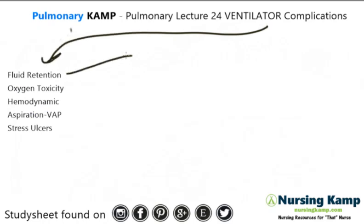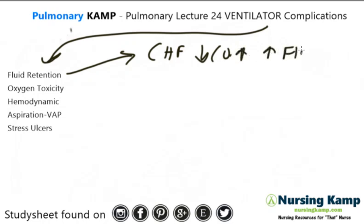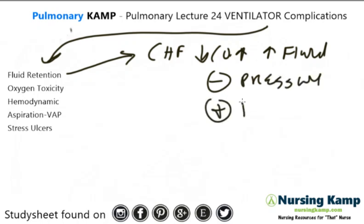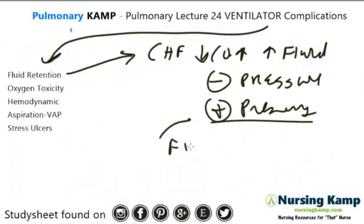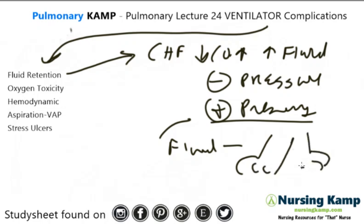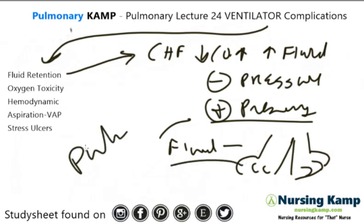When we talk about fluid retention, we're talking about patients who have CHF and they have decreased cardiac output. Once they have decreased cardiac output they're going to have an increase of fluid buildup. This can be related to the positive pressure versus negative pressure — we never have negative pressure breathing, and when you're on a ventilator you're on a positive pressure system. That positive pressure causes fluid shifts, and those fluid shifts result in edema. You have to monitor that patient for fluid retention because it can build up and become pulmonary edema.